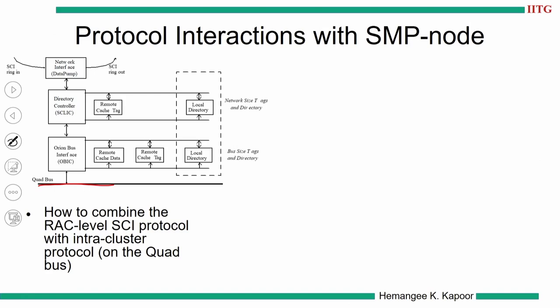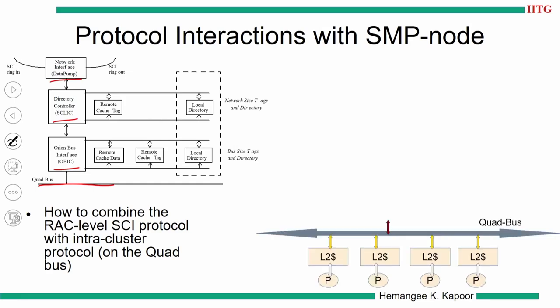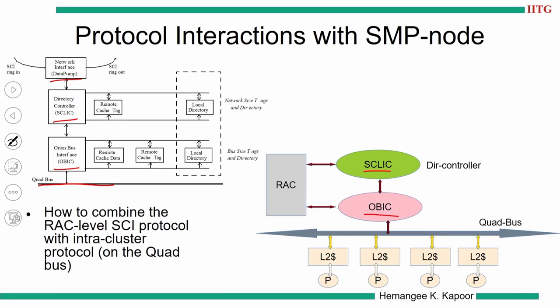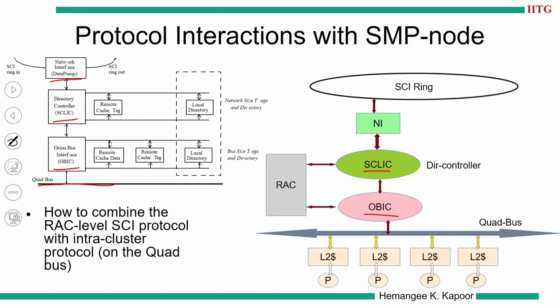On the slide, you can see the IQ link board with the bus controller, the directory controller, and the network interface. Within the quad, we have the quad bus with four processors and their L2 caches. The quad bus is connected through the bus controller OBIC to the SCLIC, which is the directory controller. Both have access to the tags and data of the remote access cache, and this whole thing connects through the data pump network interface to the SCI ring.